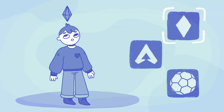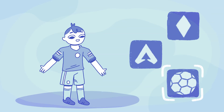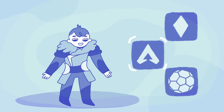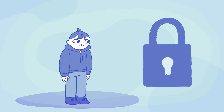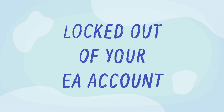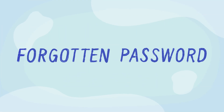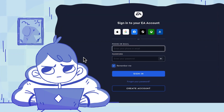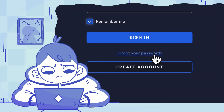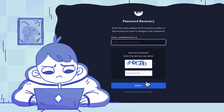Whether you've been locked out of your account before, or this is the first time it's happened, here's a couple of ways to help you get back to playing your favourite games. If you can't log in because you've forgotten your password, select Forgot Password under your EA account login.